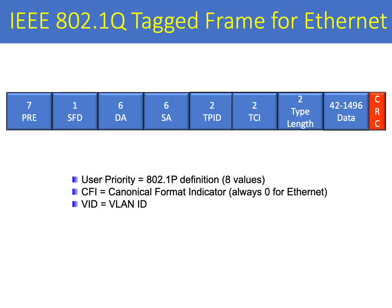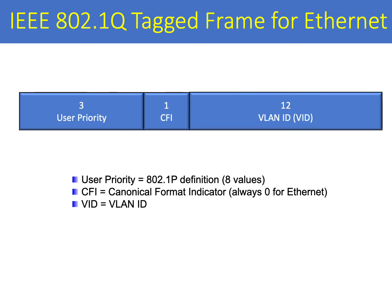Let's take a closer look at the 802.1q field. We're going to zoom in on the tag control information. This is a 2-byte field which contains information on the unique VLAN ID — 12 bits — the canonical format indicator, which is always set to 0 for Ethernet, and the three prioritization bits defined by 802.1p. Here we can have 8 different values. If this field is set to 0, it's basically best effort. If it's set to 111, it's the highest prioritization, typically used for network control. In between, you can have the other six remaining values for prioritization.